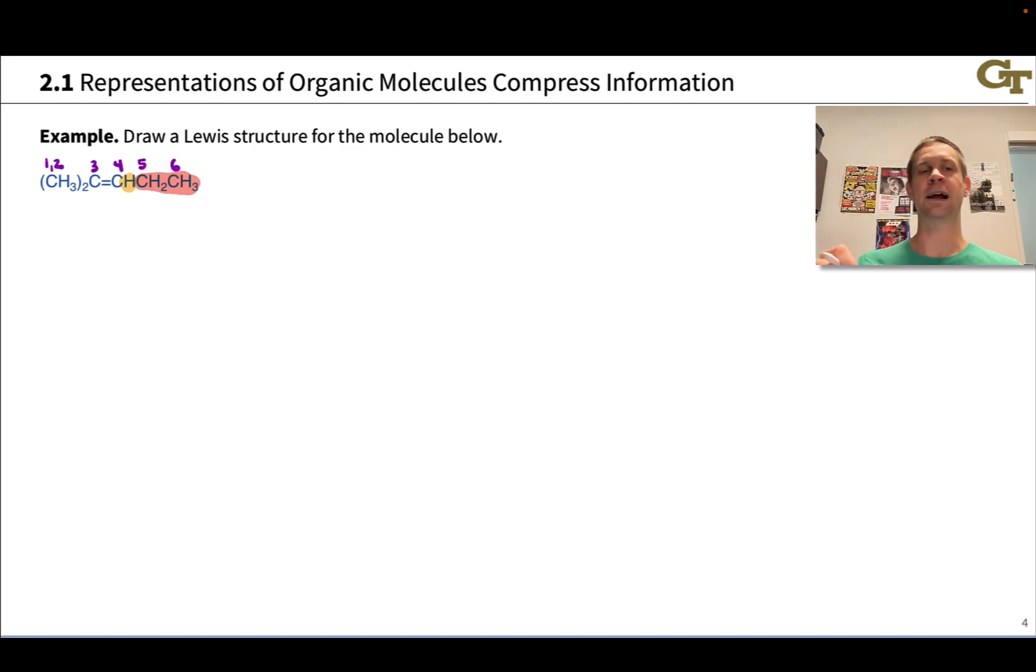We've got carbons 3 and 4 at the middle, linked by this double bond. And we already said there are two methyl groups, two CH3 groups, CH3 is known as the methyl group, linked to carbon 3, and those are carbons 1 and 2. On the other side, we have carbons 5 and 6 that are linked to carbon 4. Specifically, carbon 5 is linked to carbon 4, and carbon 6, which follows carbon 5 in the condensed formula, is linked to carbon 5. So this is our carbon skeleton. We've accounted for all of the carbons in the structure at this point, carbons 1 through 6.